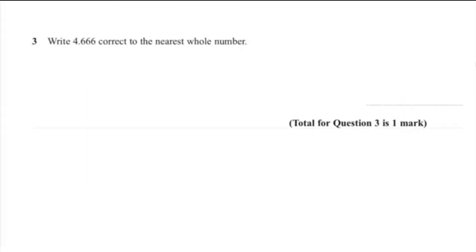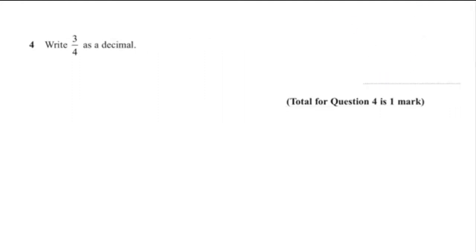Question 3: write 4.666 correct to the nearest whole number. The answer is 5. Question 4: write three quarters as a decimal. The answer is 0.75.